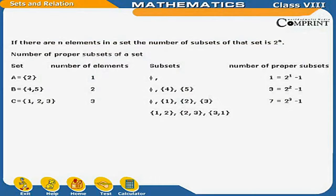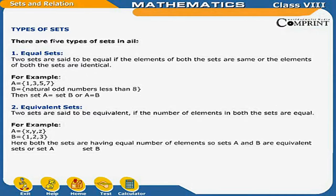If there are n elements in a set, the number of subsets is 2^n. For proper subsets: if A = {2}, number of elements 1, number of proper subsets is 1 (since 2¹ − 1 = 1). If B = {4, 5}, number of elements 2, number of proper subsets is 3 (2² − 1). If C = {1, 2, 3}, number of elements 3, number of proper subsets is 7 (2³ − 1). There are 5 types of sets in all.